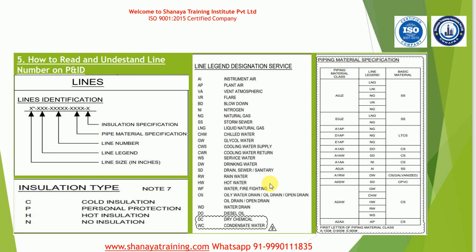The line identification has different components. The first element is line size, shown as 'X inch.' Lines are mentioned in inches in some projects and in millimeters in others. Whether it is in mm or inches will be shown in the legend sheet of the project.